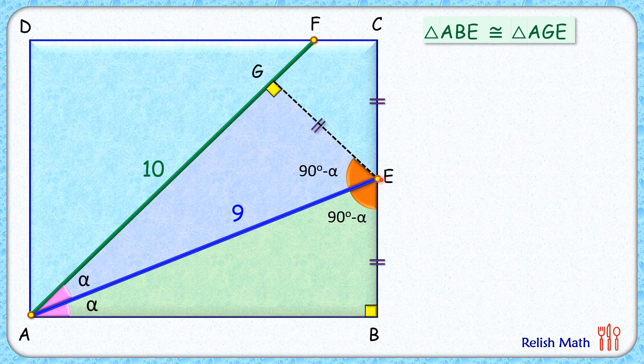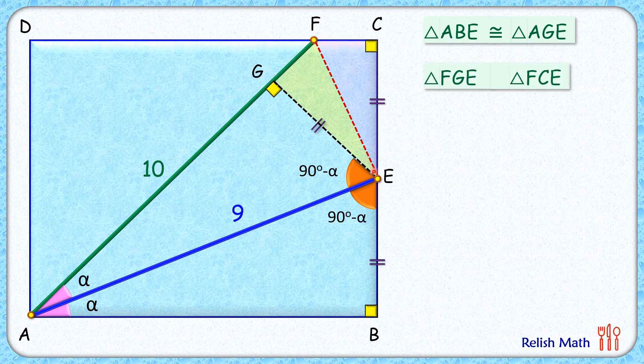Let's join EF. Now if you look at triangle FGE and triangle FCE, in these two triangles they have got a 90 degree angle, they have got equal sides, and they have got the same hypotenuse. Thus by RHS, that's right angle hypotenuse and side, both the triangles are congruent to each other.